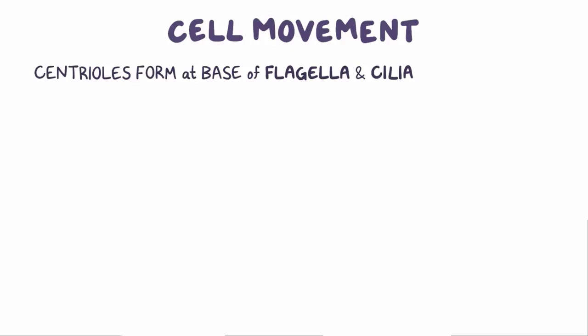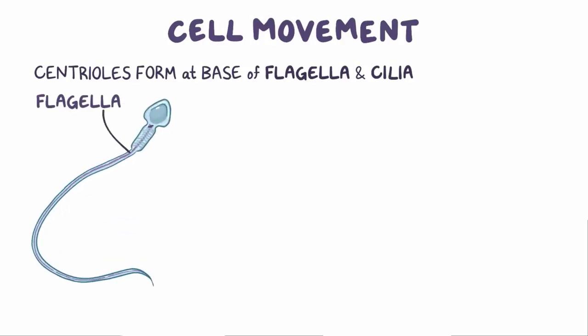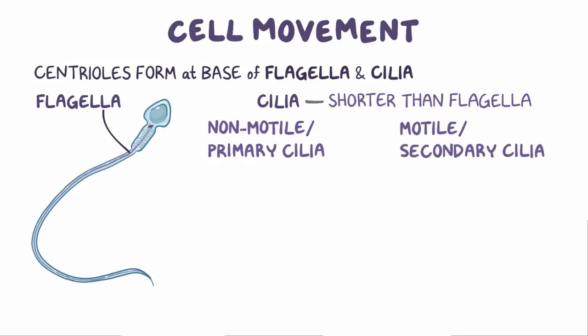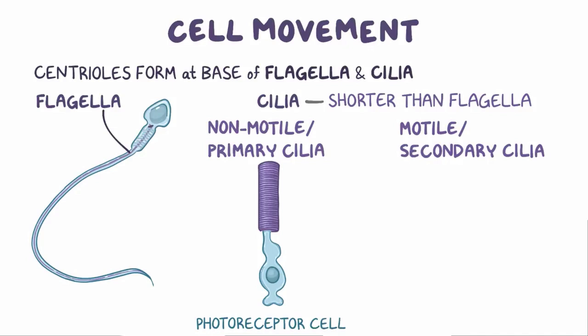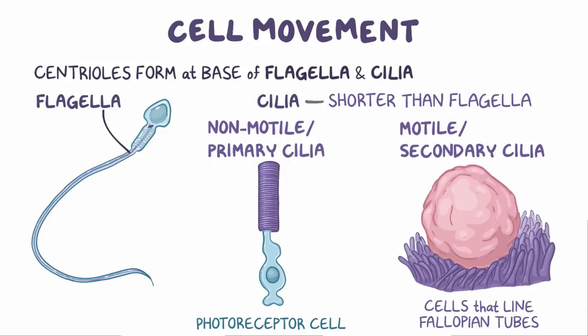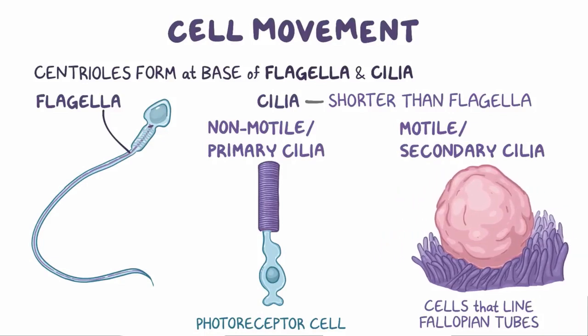Microtubules also help with cell movement, because centrioles also form at the base of flagella and cilia. Flagella form the sperm cell's tail, which wiggles to help the sperm move. Cilia, on the other hand, are shorter than flagella and can be non-modal or primary cilia, or modal or secondary cilia. Non-modal cilia are found on photoreceptor cells in the human eye and help with the absorption of photons, which the brain converts into a color image. Modal cilia can be found on cells like those that line the fallopian tubes, which slowly sway and drag the egg cell, fertilized or not, toward the uterus.